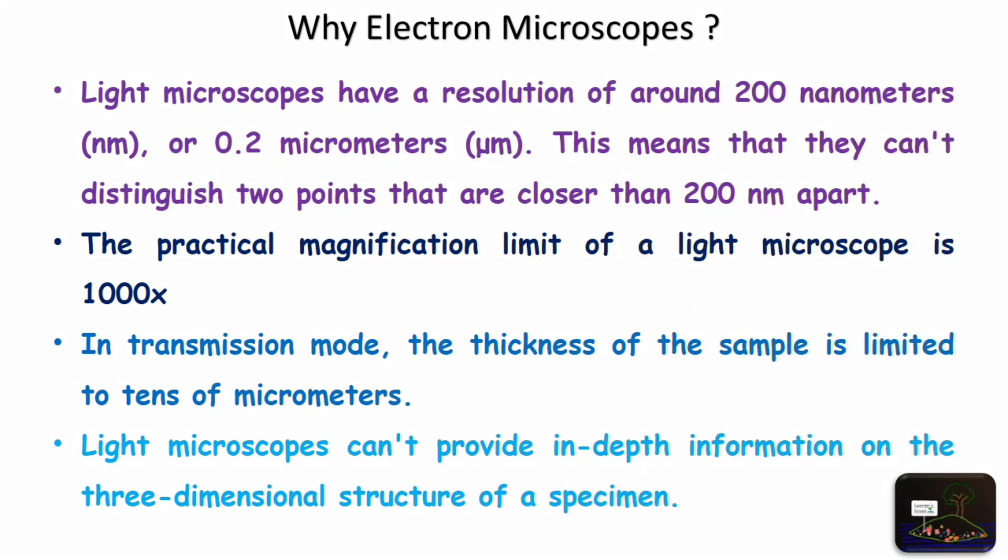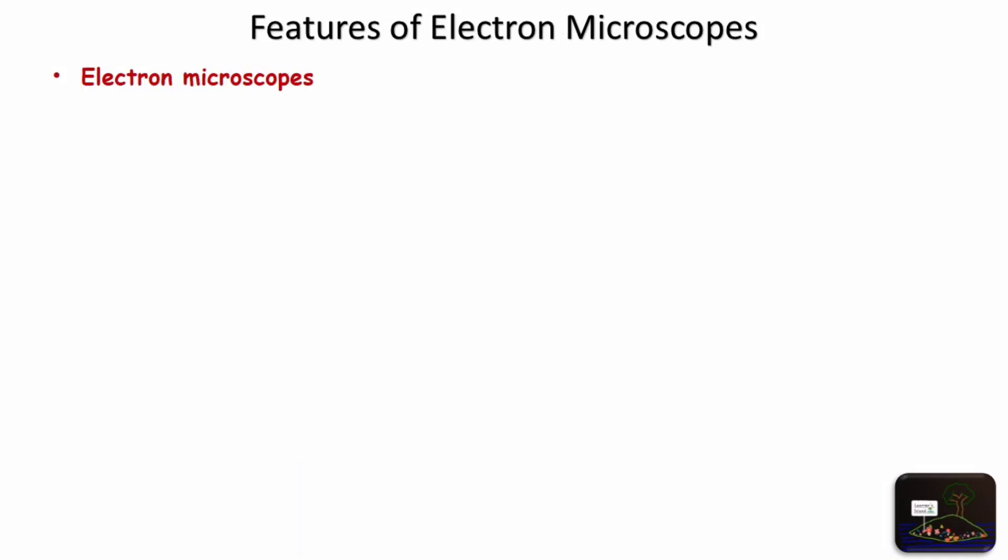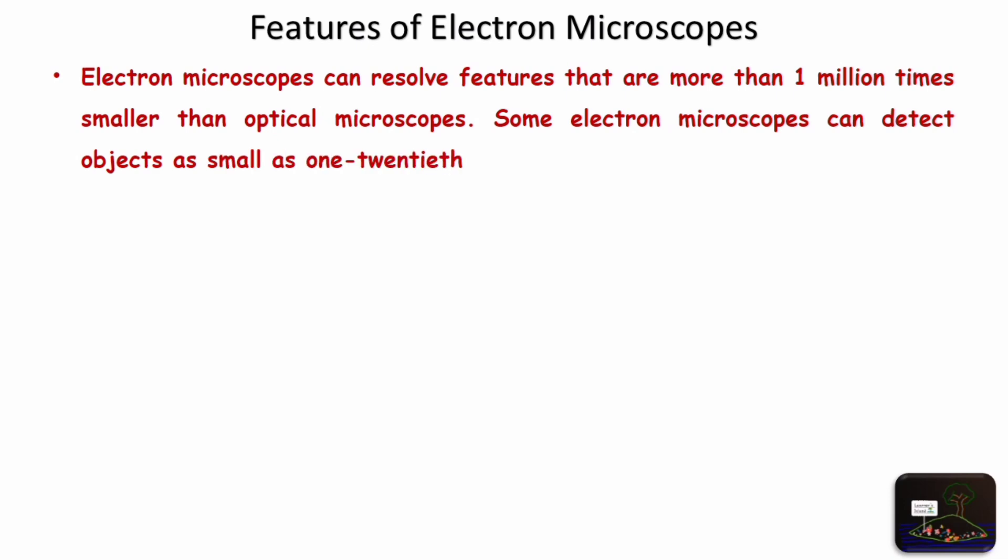Because of these limitations, electron microscope is invented. Following are the features of electron microscope. Electron microscopes can resolve features that are more than 1 million times smaller than optical microscopes. Some electron microscopes can detect objects as small as one-twentieth of a nanometer.